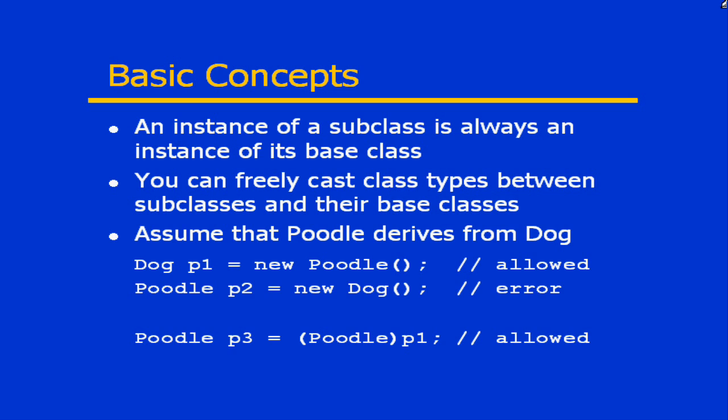Could I do this the other way around? If I create a poodle p2, can that hold an instance of a class Dog — can I do p2 equals new Dog? Well, in this case I might have a problem, because Poodle is a very specific type of dog. If I create an instance of a Dog, it could be a poodle, it could be a bulldog, it could be a terrier. While every poodle is a dog, not every dog is a poodle. So the creation of a subclass automatically implies its castability into its base class, but it doesn't necessarily go the other way around.